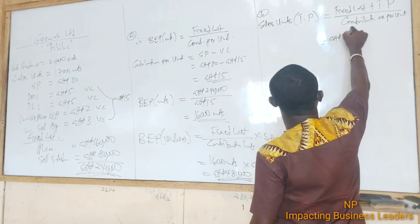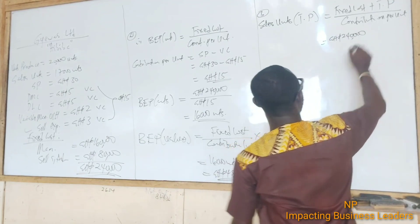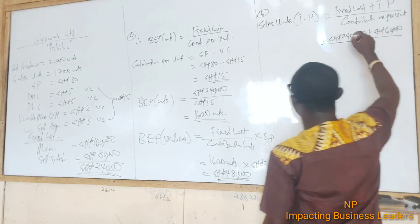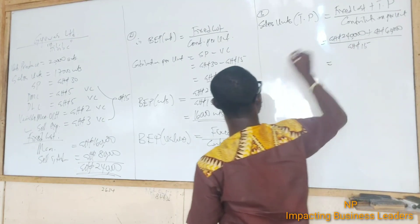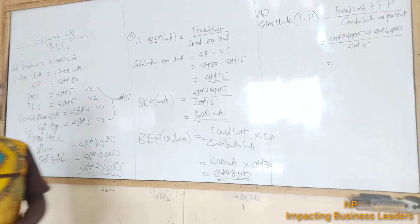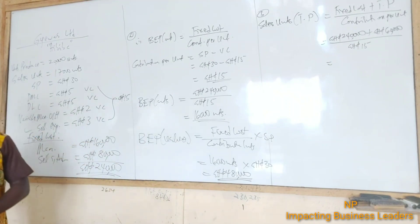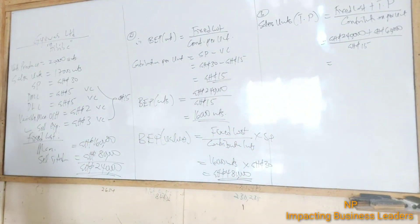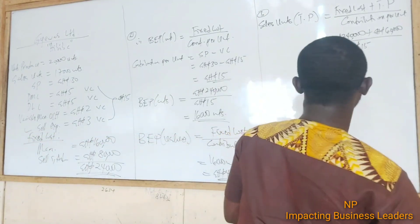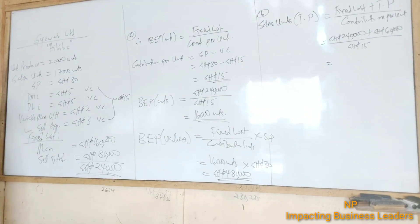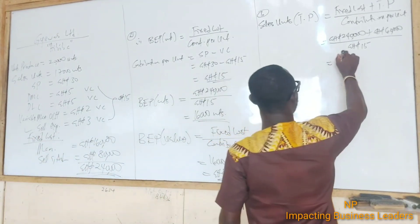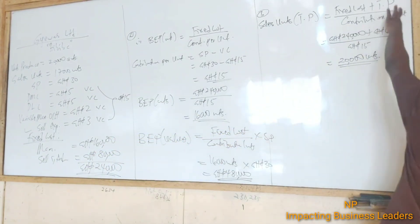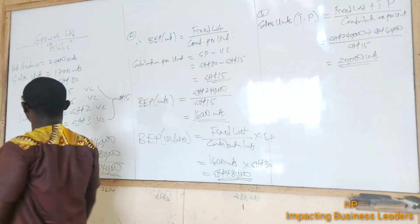Our fixed cost is $240,000, our targeted profit from the question is $60,000, and our contribution per unit is $15. So sales units for targeted profit equals ($240,000 + $60,000) divided by $15, which gives us 20,000 units. We need to sell 20,000 units of Habiba for the company to make a profit of $60,000.